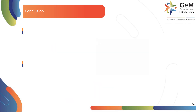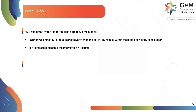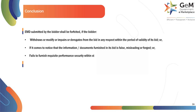Here are the key takeaways of this module. EMD submitted by the bidder shall be forfeited if the bidder withdraws, modifies, impairs, or derogates from the bid in any respect within the period of validity of its bid. Or, if it comes to notice that the information or documents furnished in its bid is false, misleading, or forged. Or, if the bidder fails to furnish requisite performance security within the stipulated time required as per the bid or RA conditions.